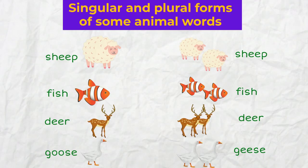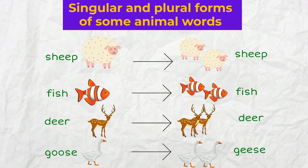It's important to know that some of these nouns have the same plural and singular forms. For example, a sheep — a lot of sheep; a fish — a lot of fish; a deer — a lot of deer. And the plural form of the word goose is geese.